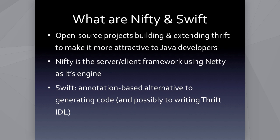So what are Nifty and Swift? Nifty and Swift are new open source projects that we build our new Java services on. The Nifty component primarily uses Netty — it's the IO engine. Swift is an annotation-based extension to how we use Thrift, which I'll talk about later. Both were originally put together by boot campers who were interested in Thrift or Netty, had experience with them at previous jobs, and thought it would be cool to build something. Since then, the Thrift team has taken over and maintains these projects.